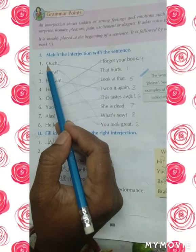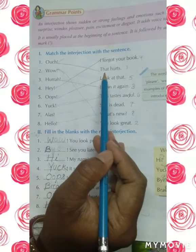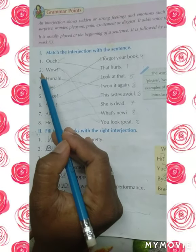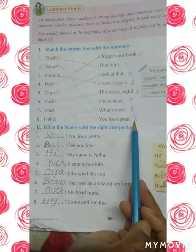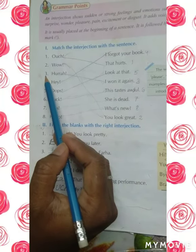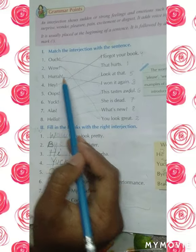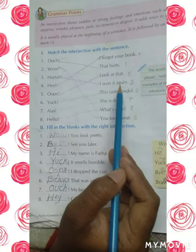Number one: Ouch - that hurts. Number two: Wow - you look great. Number three: Hurrah - I won it again. Number four: Hey - I forgot your book.